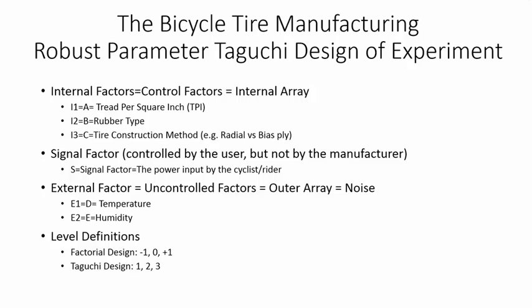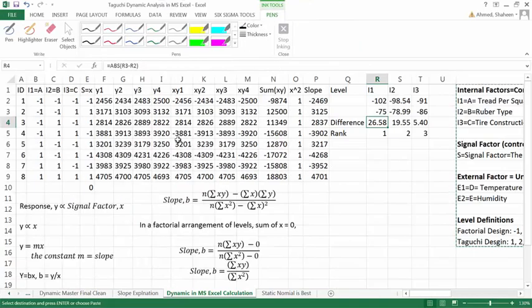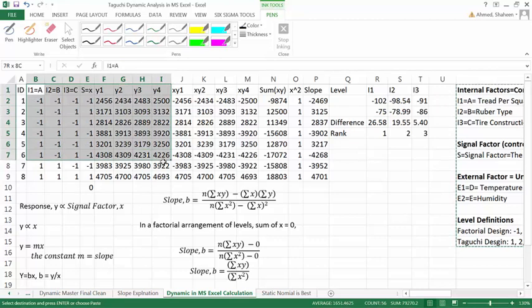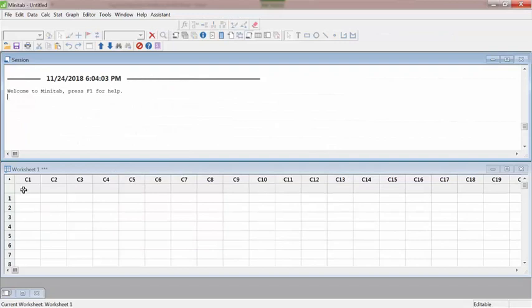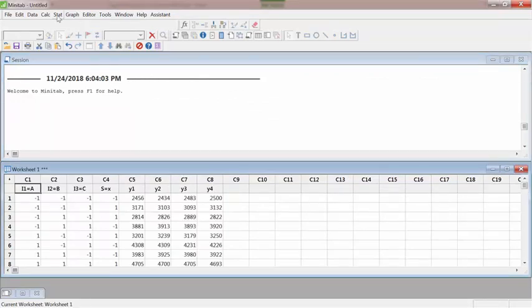Now to show you the data, this is the data file. So let's copy this data to Minitab and then run the analysis. So let's copy it in Minitab, run the analysis, dynamic analysis.